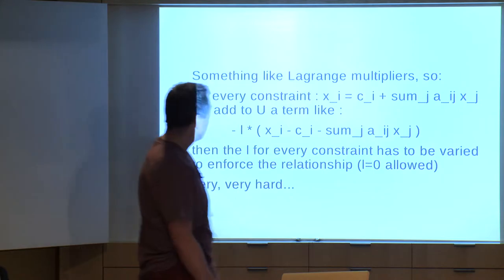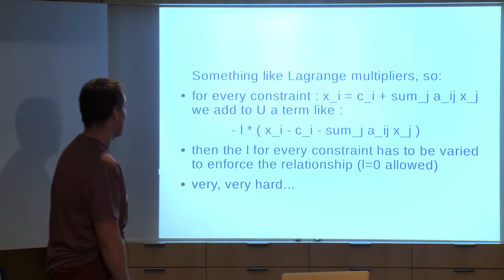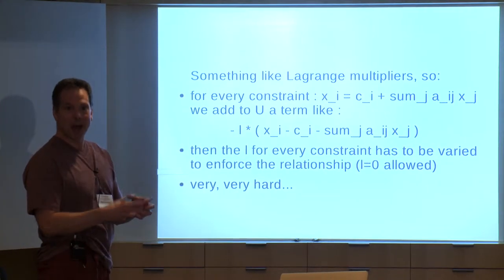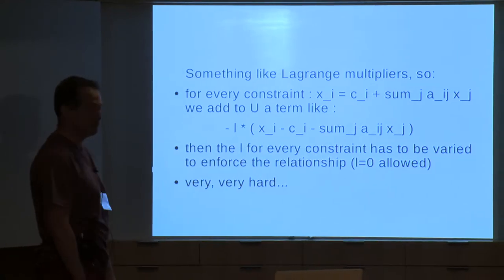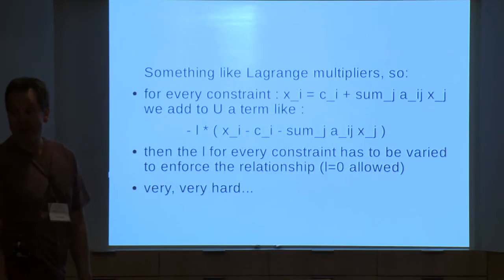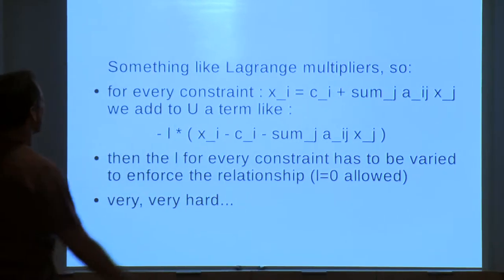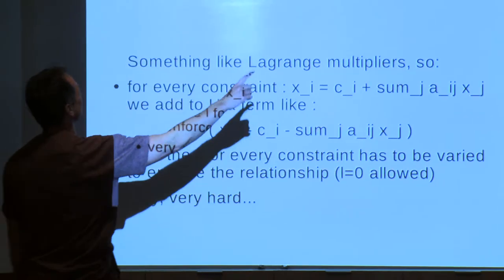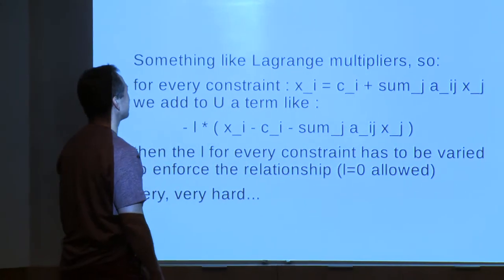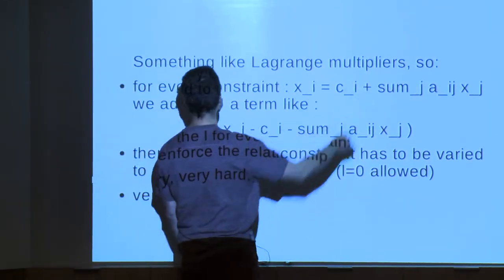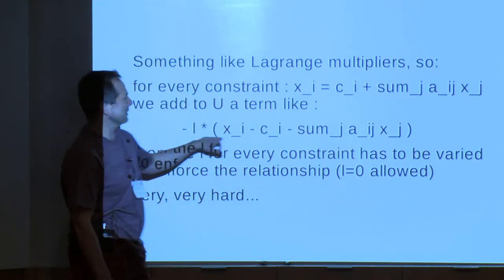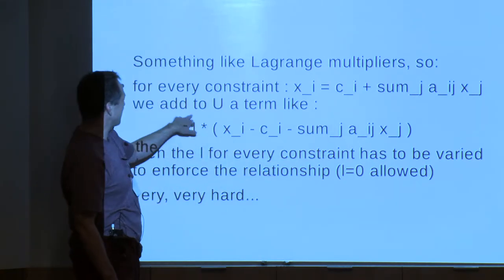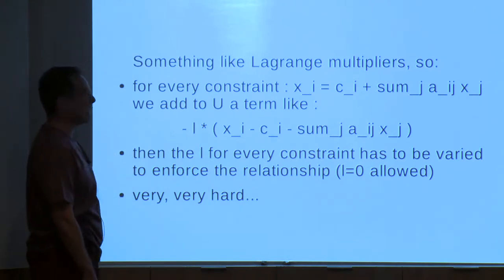You're going to want to introduce something to make your optimization not produce infinite answers. As a general rule, you always wind up doing something that looks a little bit like Lagrange multipliers. You have some constraint you want to enforce, and you add a penalty term to the utility, then vary something like a Lagrange multiplier to enforce that constraint.